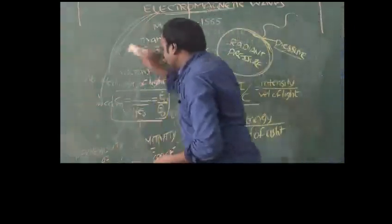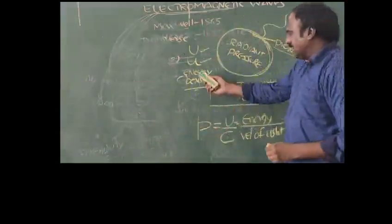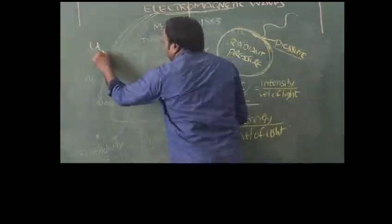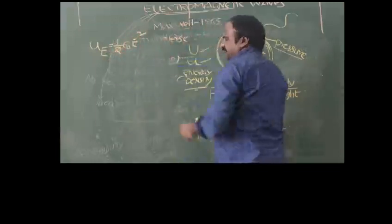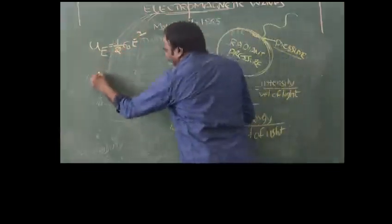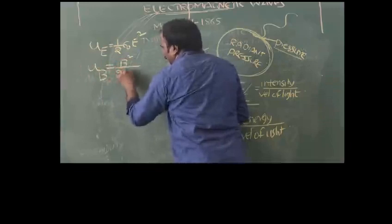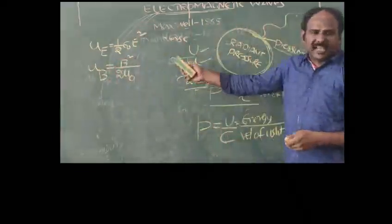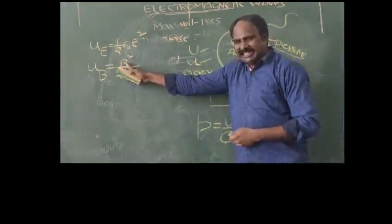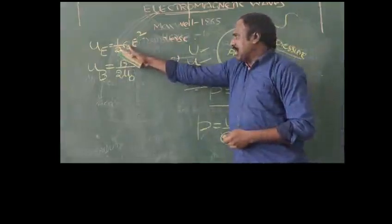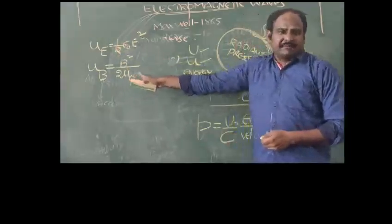We now calculate energy densities in electric and magnetic fields. In case of electric field, energy density is given by u_E = ½ε₀E². In case of magnetic field B, the energy density is given by u_B = B²/(2μ₀). Here E indicates electric field, B indicates magnetic field, ε₀ indicates permittivity of free space, and μ₀ indicates permeability of free space.